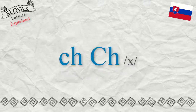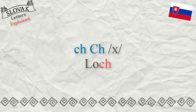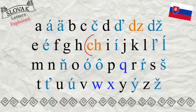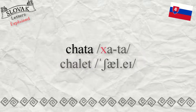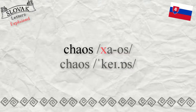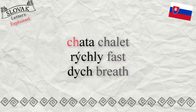The letter CH sounds always as in the Scottish word 'loch.' This digraph is considered a single letter in Slovak. C plus H is always the CH sound in Slovak, as in the word 'chata.' It is not SH as in 'chalet,' and it is not K as in 'chaos.' The letter CH can appear at the beginning, middle, or end of a word.